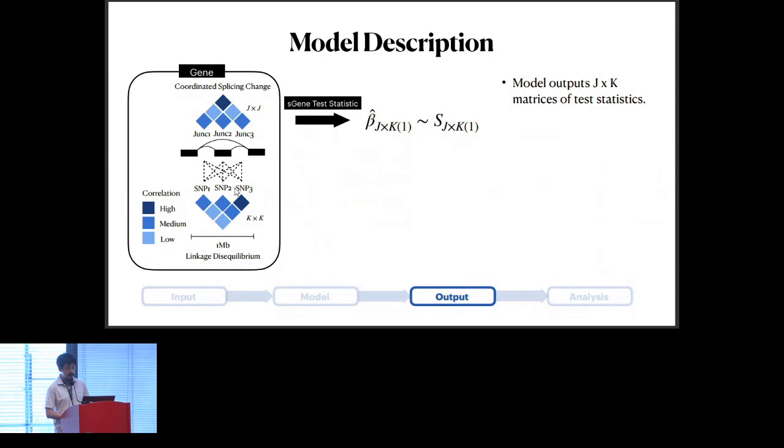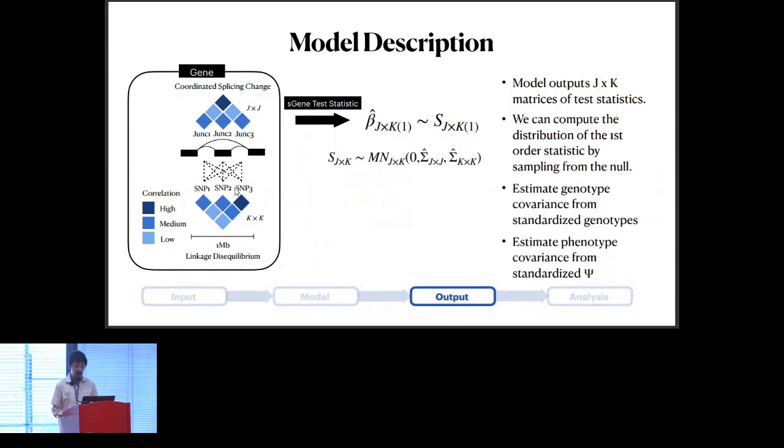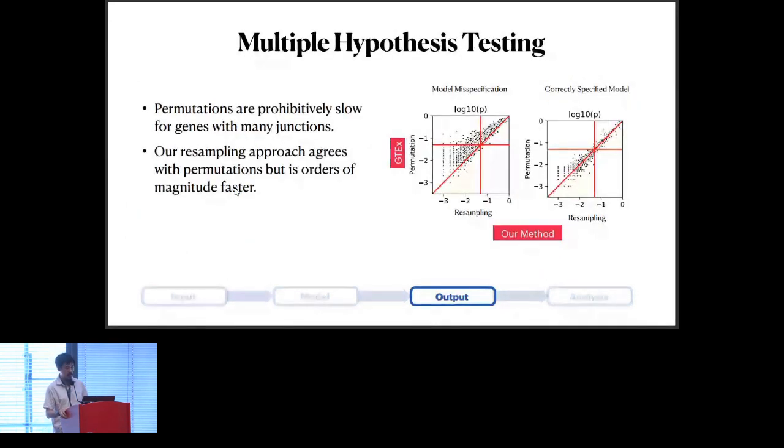We can't compute s analytically, but we are actually able to sample from s. If we model s as a matrix normal distribution with mean zero and the covariance is estimated from the SNPs and the junctions, we can then sample from this null distribution and empirically compute the p-values. We can compare that against sort of what we consider the gold standard right now, which is the permutation approach that's used by the GTEx model. From what you see here is basically, if you use a misspecified model on the left, the p-values between GTEx and our approach doesn't really agree. But then when you use the correctly specified model, you see that there's a nice agreement between our resampling approach and the permutation that GTEx uses. But our approach is many orders of magnitude faster. This is especially important for splicing data because the permutations are prohibitively slow when your genes have many hundreds of junctions.